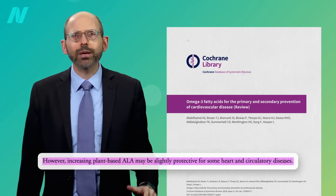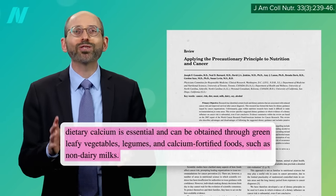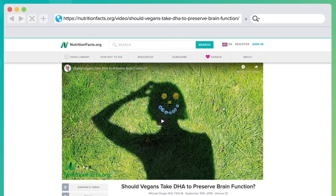But the long chain omega-3s are important for brain health, thankfully. Just like there are best-of-both-world non-dairy sources of calcium, there are pollutant-free sources of the long chain omega-3s, EPA, and DHA as well.